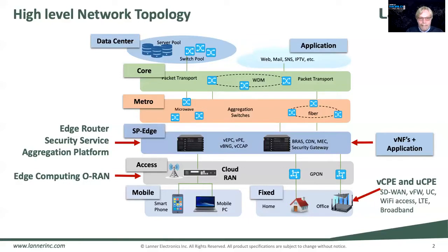The next level beyond RAN is really the service provider edge. The service provider edge provides the aggregation — coming from an SD-WAN device or universal CPE device and basically aggregating traffic as an aggregation point. These platforms typically require network infrastructure for networking, compute acceleration, and storage at the same time. So these are some of the key areas we want to focus on in this presentation.